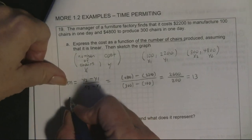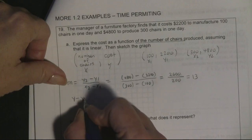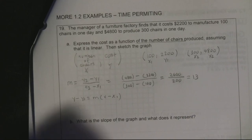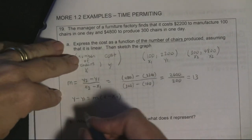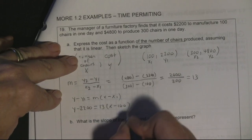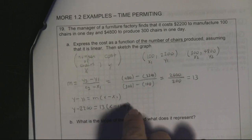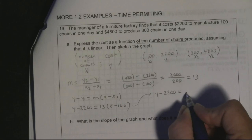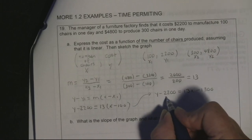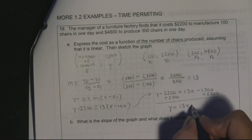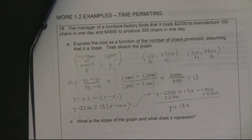Using point-slope form: y minus y1 equals m times x minus x1. With (x1, y1) = (100, 2200) and slope 13, I get y minus 2,200 equals 13 times (x minus 100). Distributing the 13 and adding 2,200 to both sides: y equals 13x minus 1,300 plus 2,200, which gives y equals 13x plus 900.